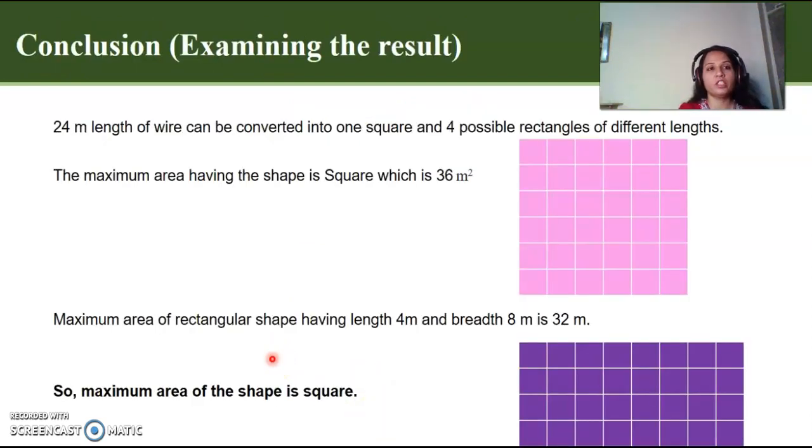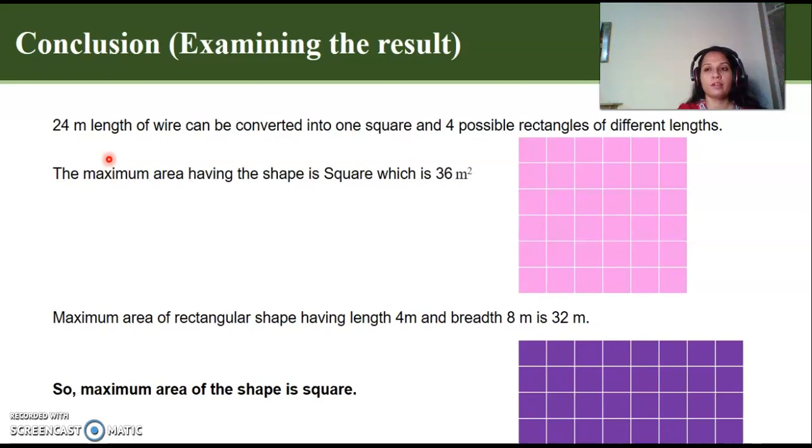And our final step is conclusion, which means examining the result. So, let's have a look at the examination of our result. 24 meter length of wire can be converted into one square and four possible rectangles of different lengths. The maximum area having the shape is square, which is 36 meter square. However, the maximum area of rectangular shape, having length 4 meter and breadth 8 meter, is 32 meters. So, maximum area of the shape is square.